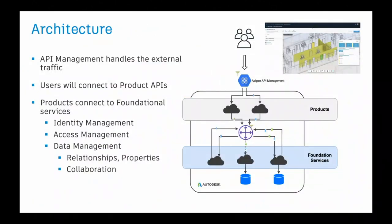So what exactly happens internally? This is our architecture. On the high level, for north-south traffic, we have Apigee API management platform, which is the entry point into our Forge APIs. Then we have our product APIs — like BIM and Viewer and many more products — which are actually dependent on foundational services. Those foundational services include identity, access management, and data management where you do the relationship, properties, and collaboration operations. These are pretty heavy, compute-intensive operations, so it's pretty important that we are highly available and resilient.